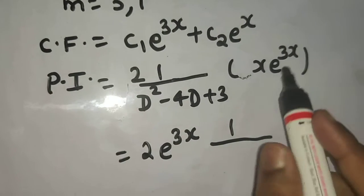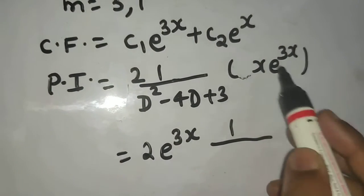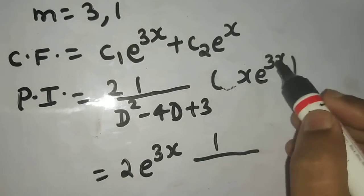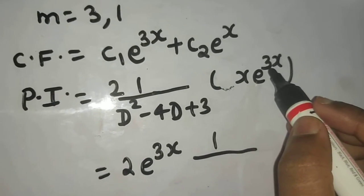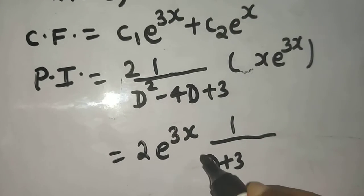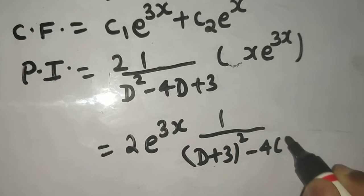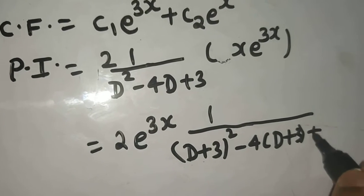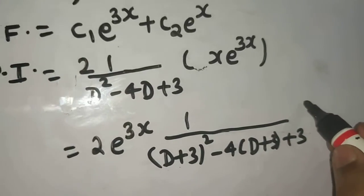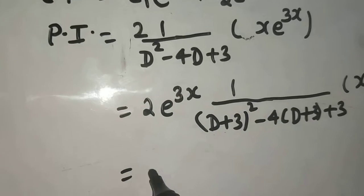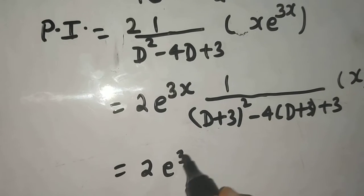So 2 e power 3x, then it says replace d by d plus a, where a is the coefficient of x in this expression, coefficient of x in e power ax term. So that is 3. So replace d by d plus 3. So it will be d plus 3 the whole square minus 4 times d plus 3 plus 3.